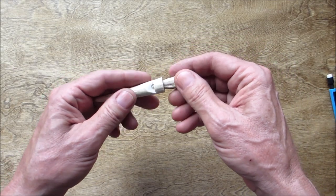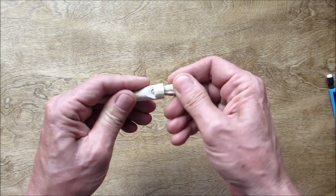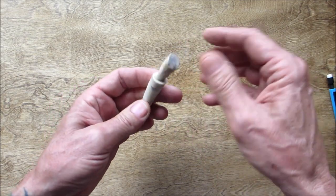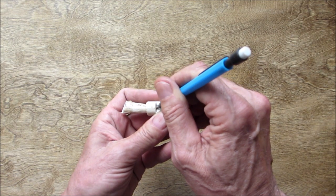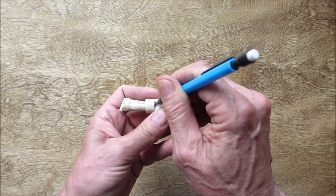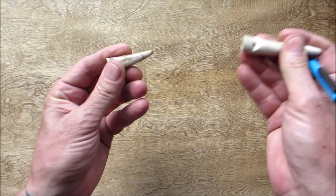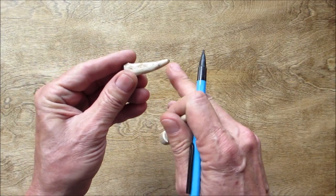The next thing we want to do is kind of wiggle it until we got the right spot that looks good. Now I'm going to reach in here with a pencil, I'm just going to draw a line, and I'm going to cut that off. I'll bring you back when that's done.